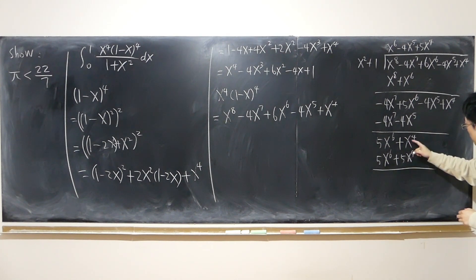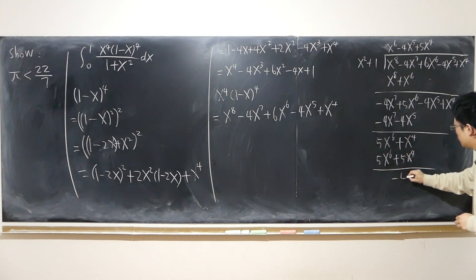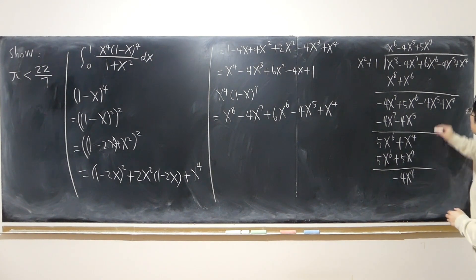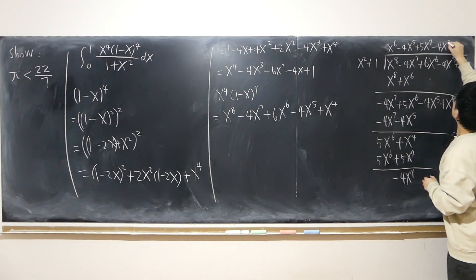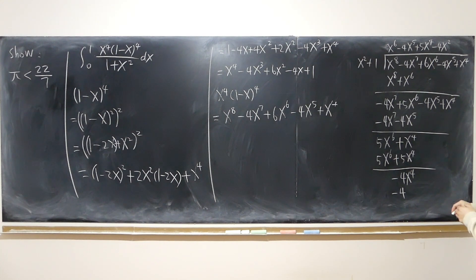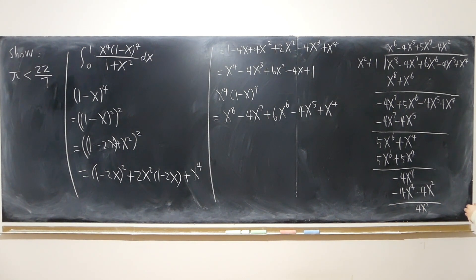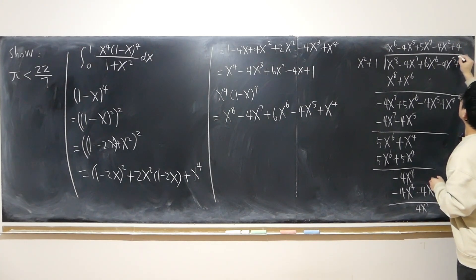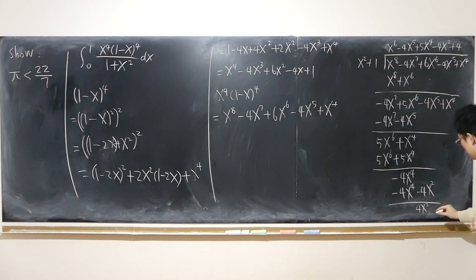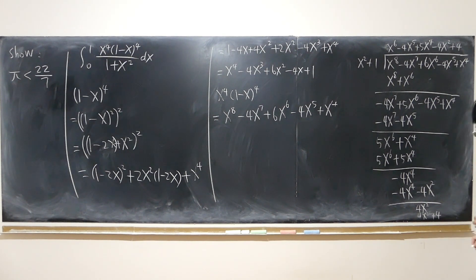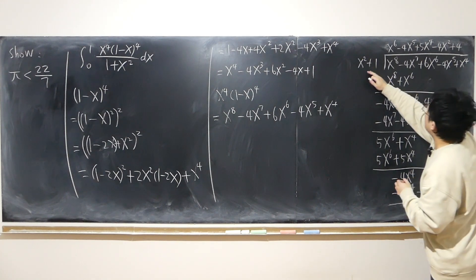Subtracting: 5x^6 is gone. We have negative 4x^4 remaining, so the next term is negative 4x^2, giving minus 4x^4 minus 4x^2. Subtracting those, we must add 4x² back, so plus 4x² minus 4. The remainder is negative 4.